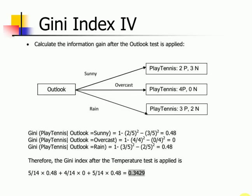Similarly for outlook, which was our main splitting criteria in entropy, gives 0.3429, which is not the maximum in this case.